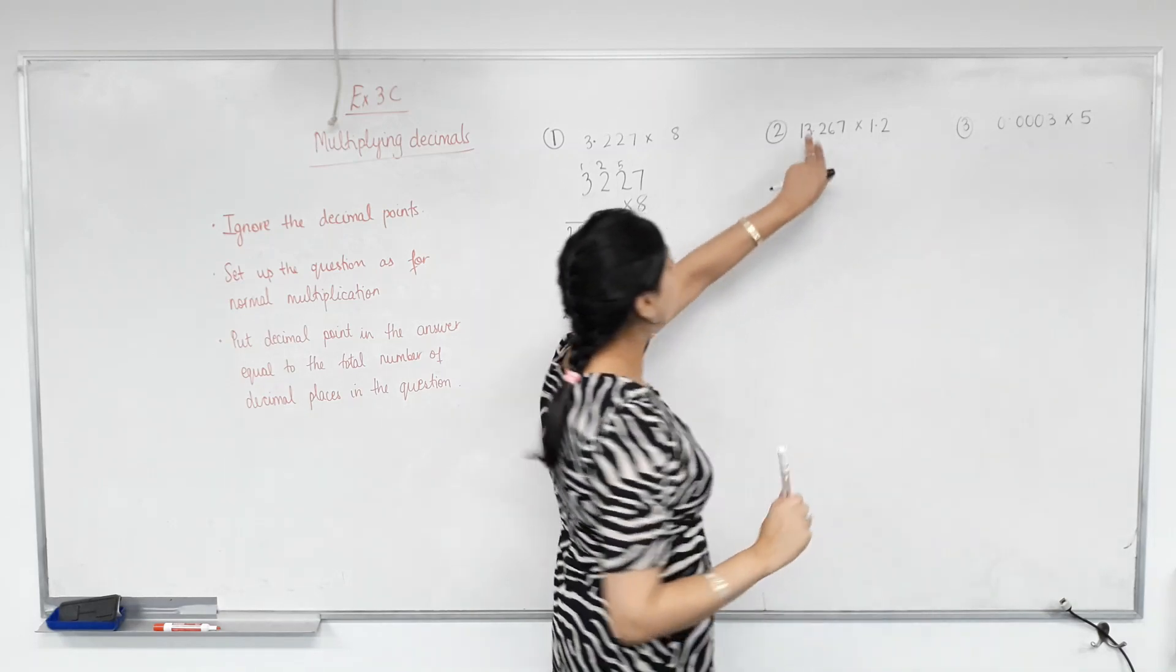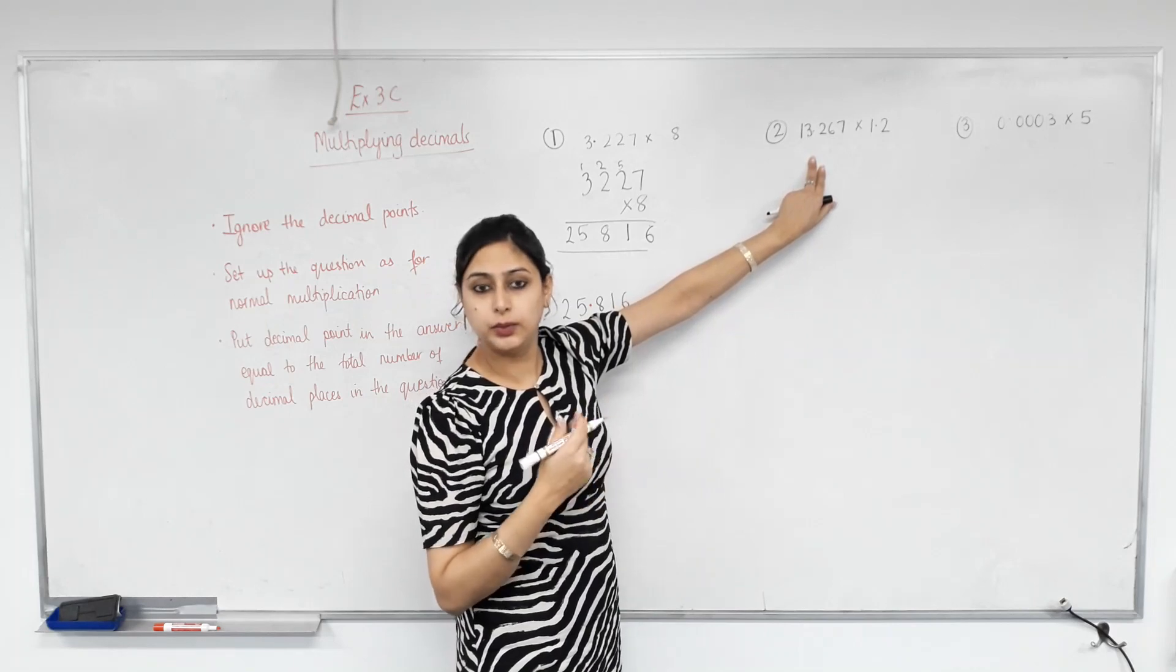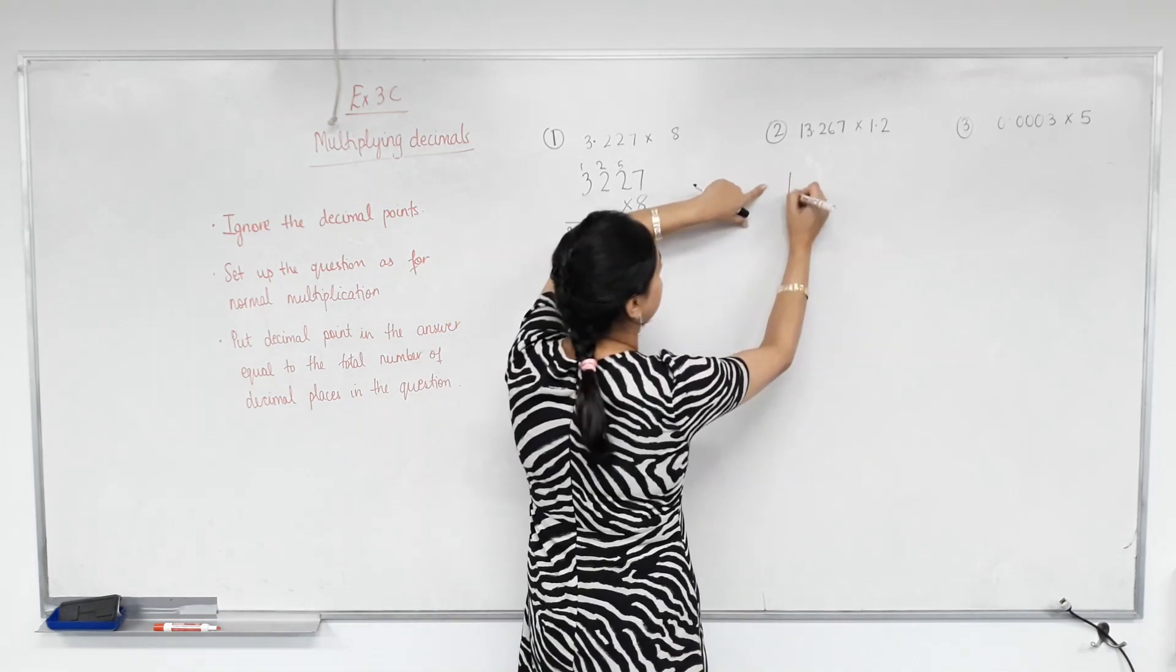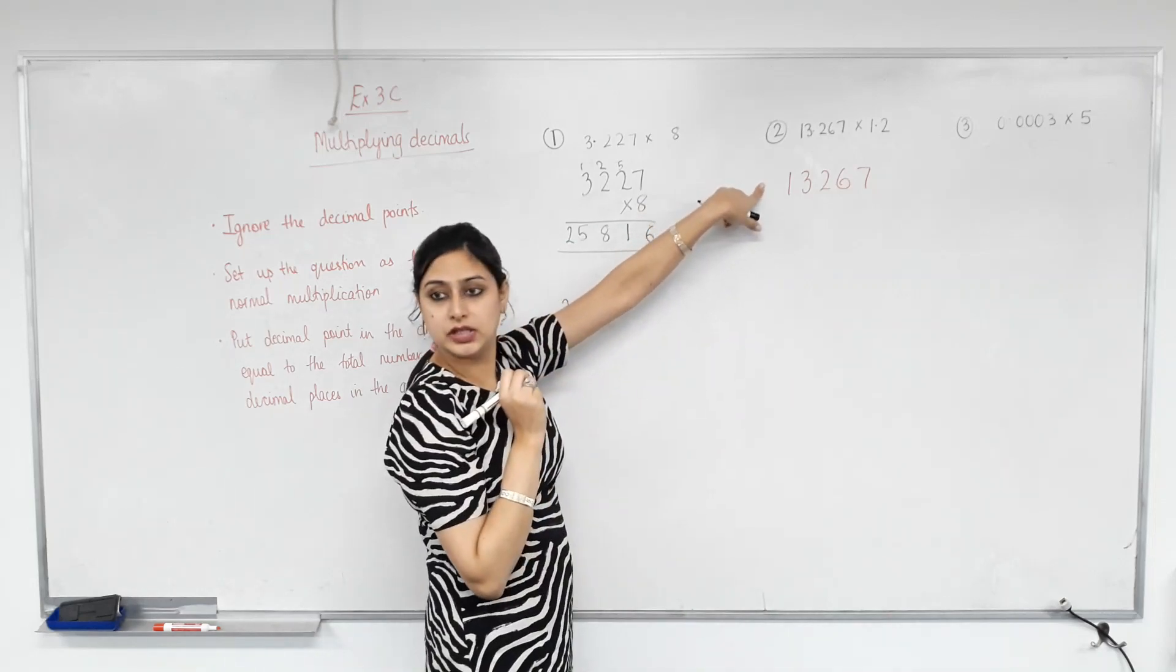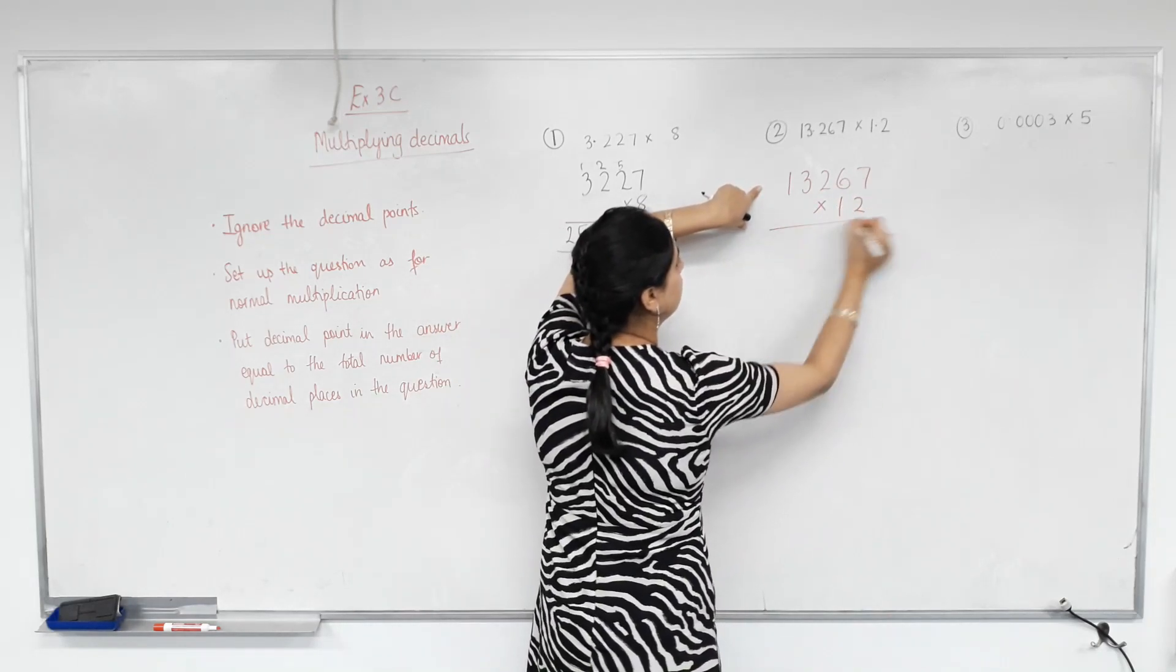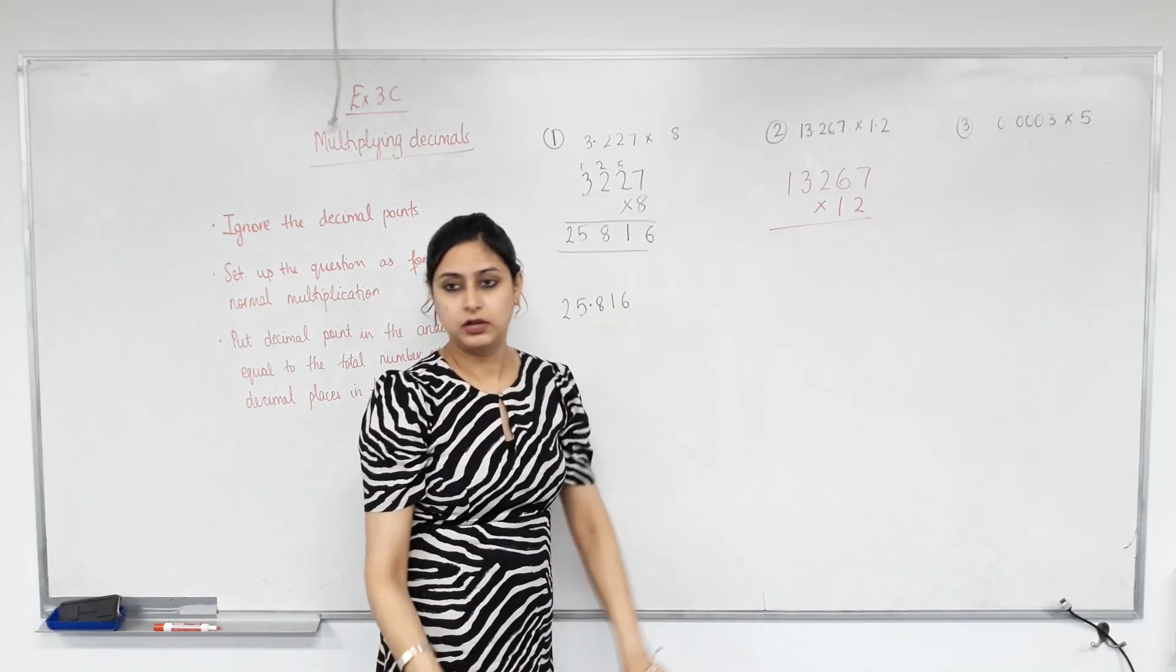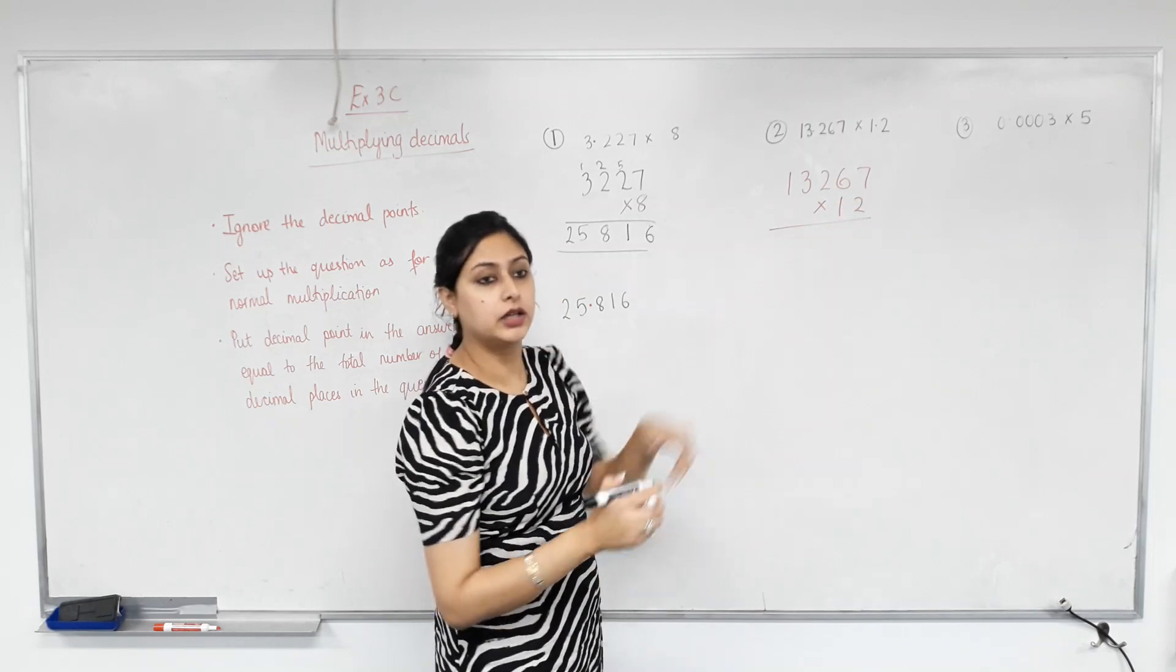Next one. Now, both of these are decimals. Does not change our working out in any way, shape or form. Let's write that. 13267. Have I ignored the decimal? Yes. Times by 12? Yes. I've ignored the decimal, haven't I? Yes. Let's time. So do we times it 1 first or 2? 2. Well done. Units digit first.